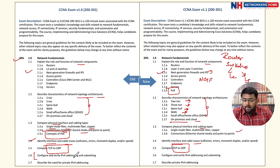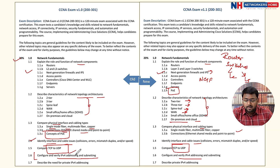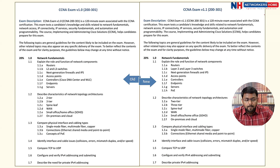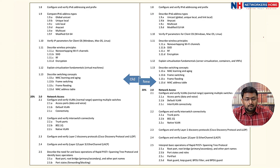Next, we configure and verify IP addressing and subnetting. We have two IP versions: IPv4 and IPv6. We discuss IPv4 addressing including subnetting, private IP addresses, and public IP addresses. After that, we configure and verify IPv6. IPv4 is 32 bits and IPv6 is 128 bits.